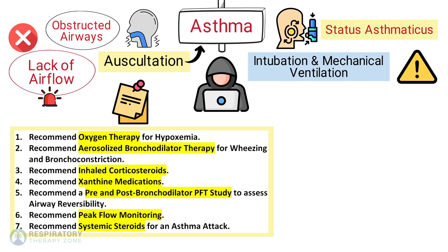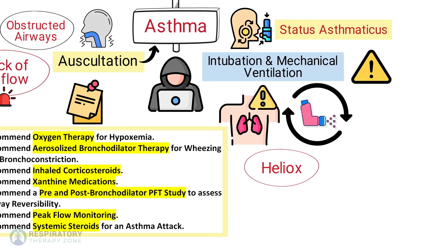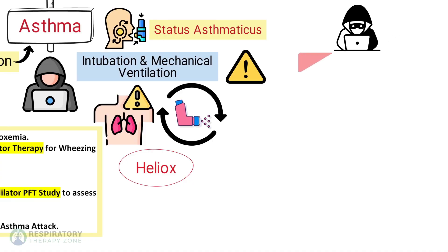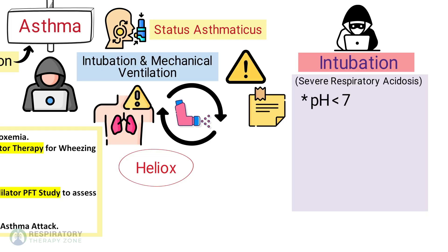If the patient does not respond to bronchodilators and other treatments, status asthmaticus is likely. This condition is more severe and may require intubation and mechanical ventilation for impending ventilatory failure. For these patients, recommend continuous bronchodilator treatments, and heliox therapy may also be indicated. Remember that intubation is always recommended for severe respiratory acidosis when the pH is less than 7.25 or the PaCO2 is greater than 60.